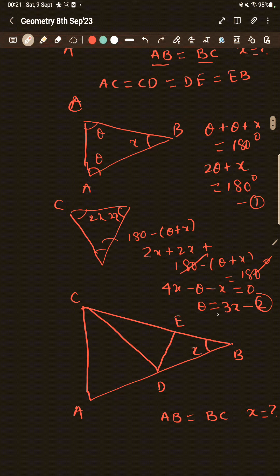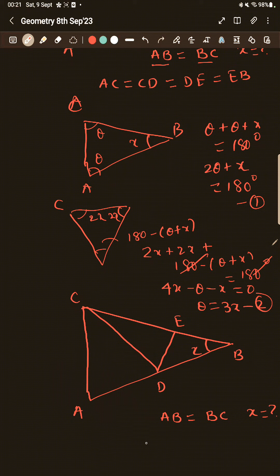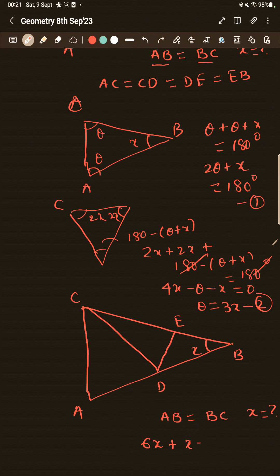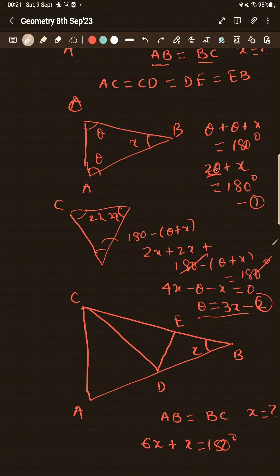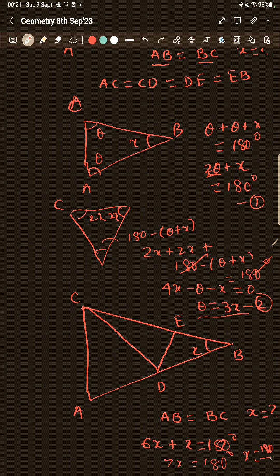So we have two equations, theta equal to 3X and 2 theta plus X. So we will just put theta equal to 3X here. So 3X into 2 plus X will be equal to 180 degrees. I am just putting the value of theta in equation 1. Theta is 3X, so 3X into 2, 6X plus X, 7X is equal to 180 degrees. So X will be 180 by 7. This is my answer.